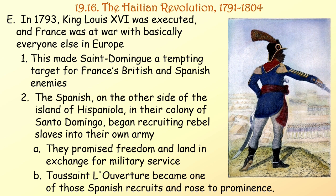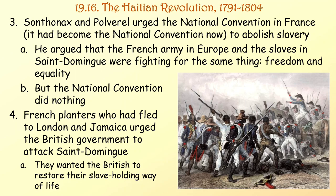In 1793, King Louis XVI was executed and France was at war with basically everyone else in Europe, making Saint-Domingue a tempting target for France's British and Spanish enemies. The Spanish on the other side of Hispaniola began recruiting rebel slaves into their own army, promising freedom and land in exchange for military service. Toussaint Louverture became one of those Spanish recruits and rose to prominence. Santanax and Polverel urged the National Convention to abolish slavery, arguing that the French army in Europe and the slaves in Saint-Domingue were fighting for the same thing — freedom and equality. But the National Convention did nothing. French planters who had fled to London and Jamaica urged the British to attack Saint-Domingue and restore their slave-holding way of life.